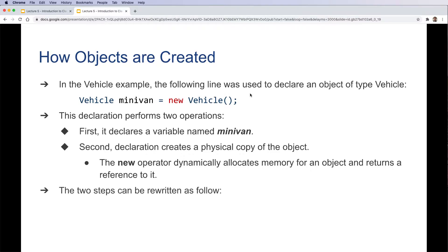This line can actually be rewritten as follows: we can declare a minivan of type Vehicle in one line, which just creates a reference, and minivan equals new Vehicle actually dynamically creates an object.